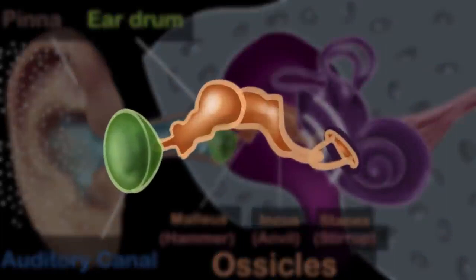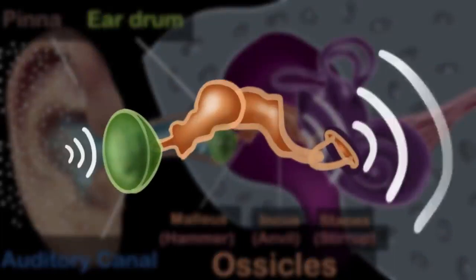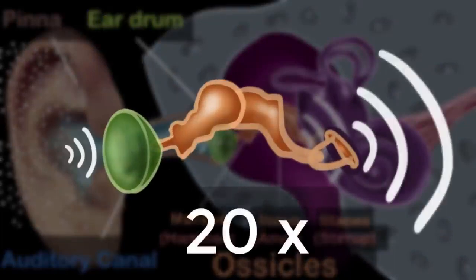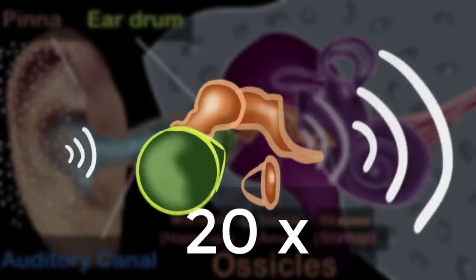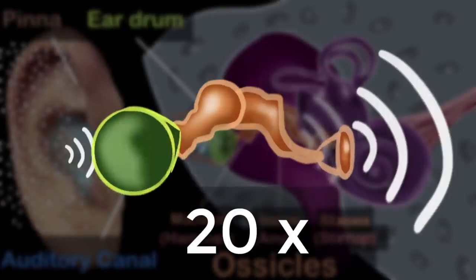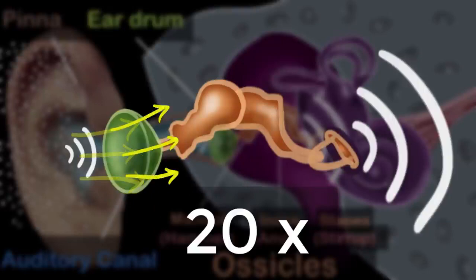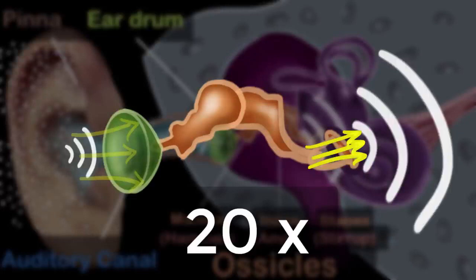It turns out that our ossicles increase the pressure of the sound about 20 times. But how do they do that? Just take a look at the base of the stapes — it has such a small area compared to that of the eardrum. So when the force gets transmitted from the eardrum to the stapes, it gets concentrated in a very tiny area. And when you concentrate force in a very tiny area, you increase its pressure.